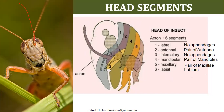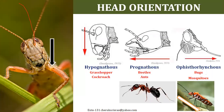We will also discuss the sclerites — the plates available in the head. Each plate is separated by a line called a suture. Before looking at the plates, let us understand the orientation of the head — how the head is oriented to the body. There are three orientations you can see in the picture: prognathous, hypognathous, and opistognathous (also called opistorhynchous).